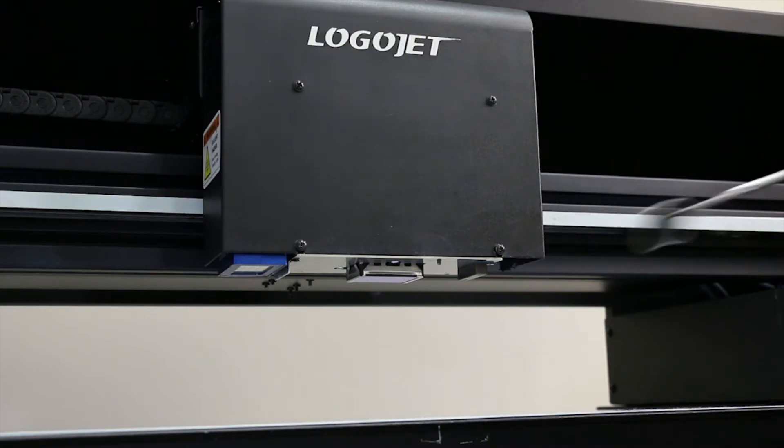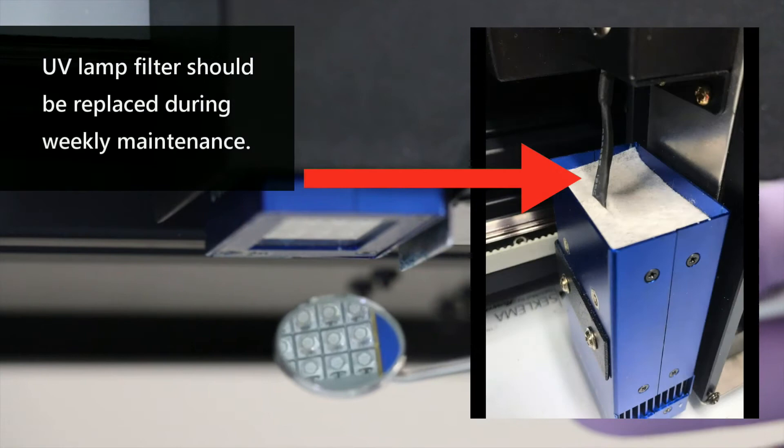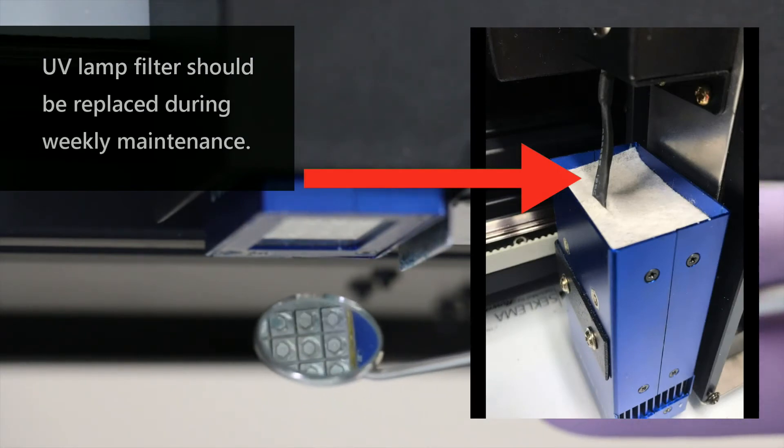Then the very last thing we're going to do for the carriage is inspect the UV lamp with our inspection mirror to make sure that everything is clean and clear and looks good. And then we are complete.